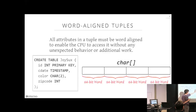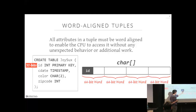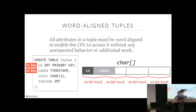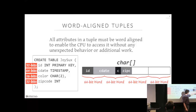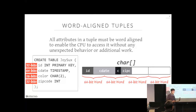Say we have a table with four attributes and we break our byte array into 64-bit words. The 32-bit integer primary key ID fills half of the first word. Then we have a 64-bit timestamp, but it ends up spanning two different words — crossing the word boundary. We then have a 16-bit char2, followed by a 32-bit zip code integer field, which also spans two words. What's the problem with this? If I want to read the date attribute, how many reads do I need?